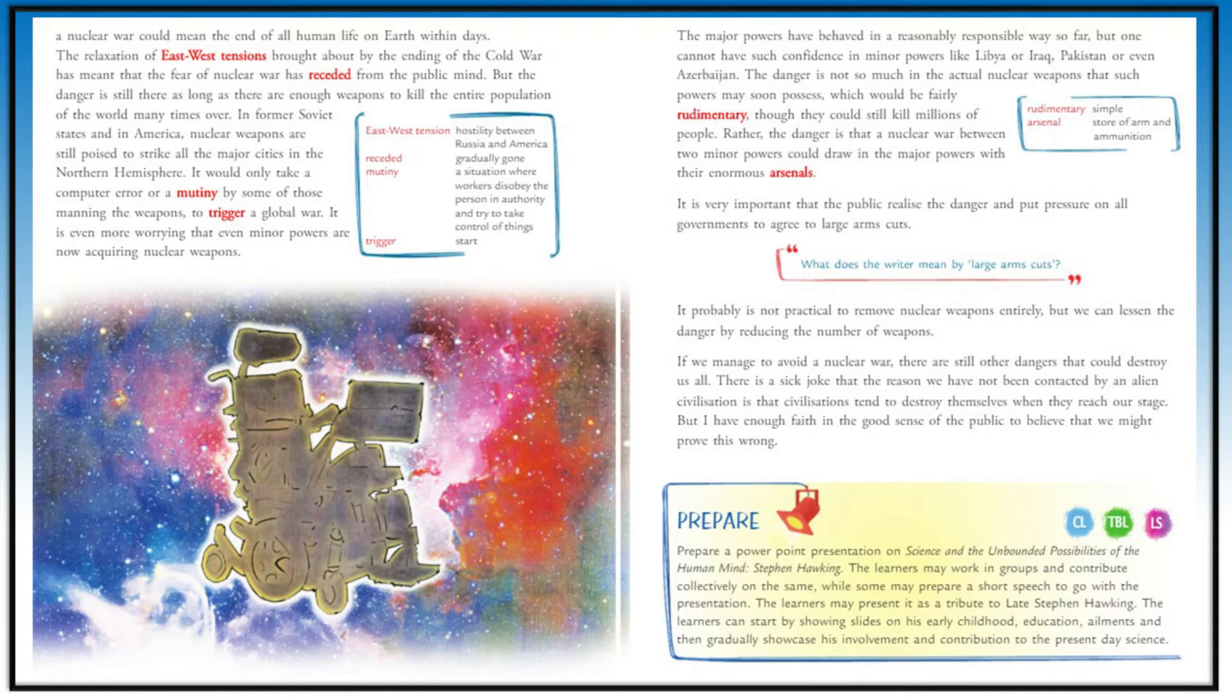It is not possible to remove nuclear weapons completely, but the number can be reduced to reduce the dangers. He says even if we manage to avoid nuclear war, there are many other dangers that could destroy us all. He talks about a sick joke—why aliens have not contacted us is because when civilizations get very developed, they try to destroy themselves. But he ends with a positive note that he has faith in people that they will prove the sick joke wrong and will never let nuclear war happen.